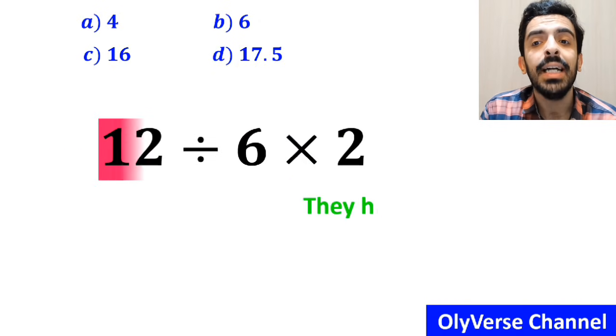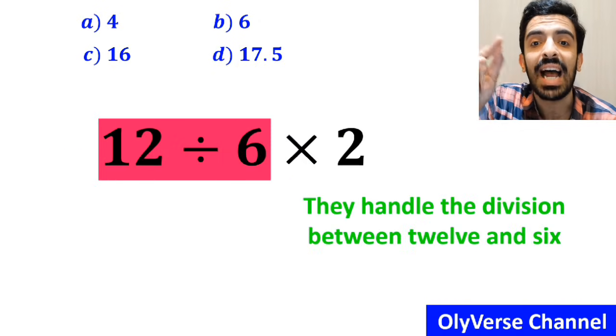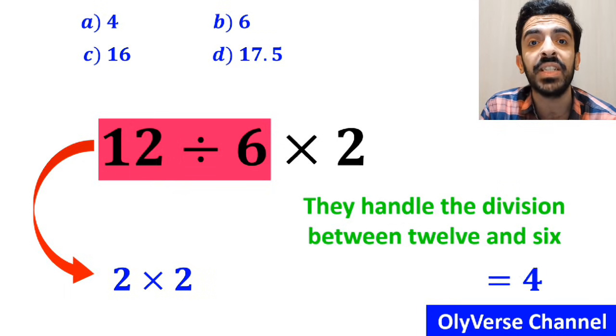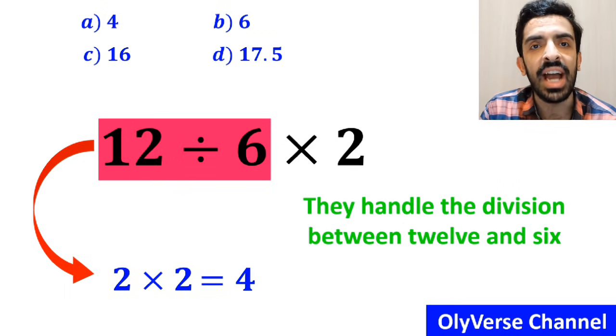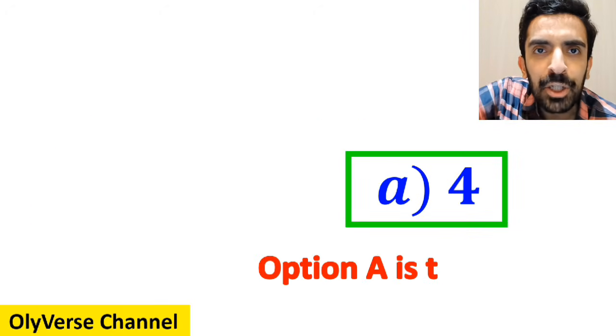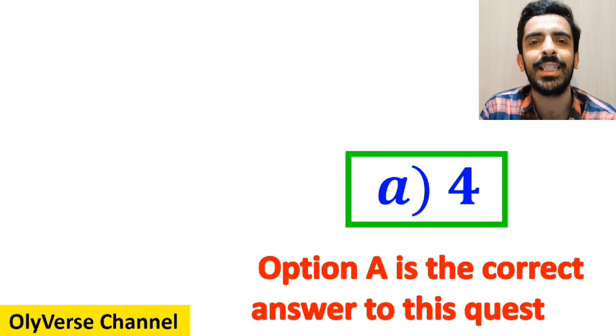At the final step, they handle the division between 12 and 6 and write this expression as 2 multiplied by 2, which eventually gives them the answer 4. Then, without any hesitation, they quickly say that Option A is the correct answer to this question.